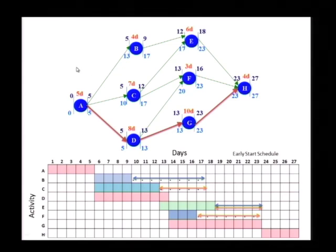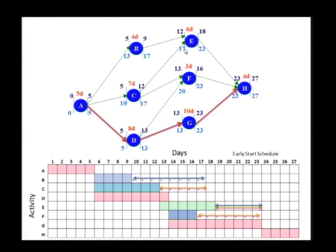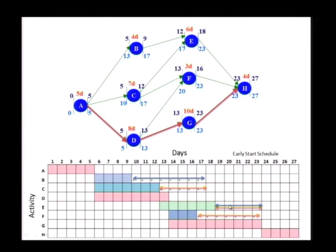Any questions — please raise them. What about C? Total float of five days. Here is C. I can move it all the way, but when I start moving C, what happens? Does it have any free float? No, it has no free float, because the minute I move C to the thirteenth day, E will start moving. You can see that in the bar chart — here is C and E starts right here. The minute I move C by 1, E will also start moving by 1.